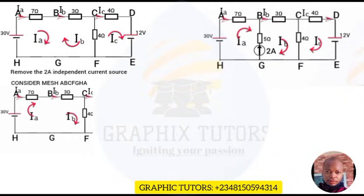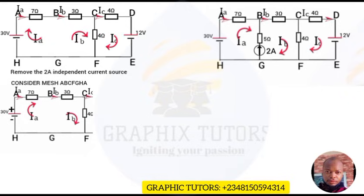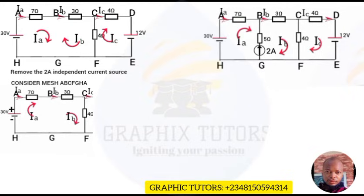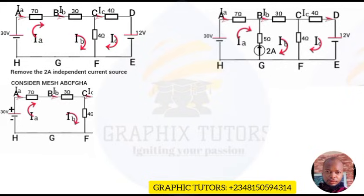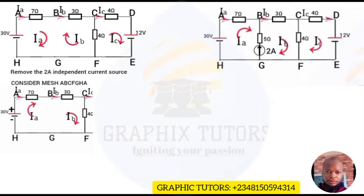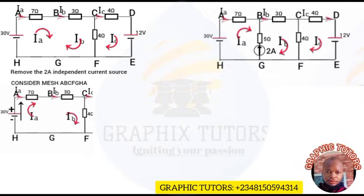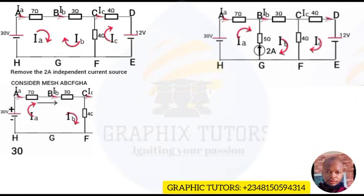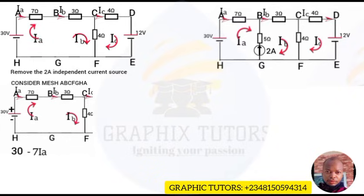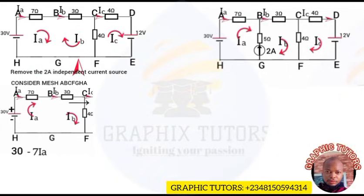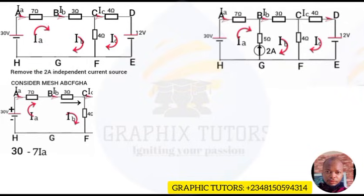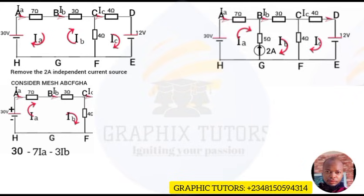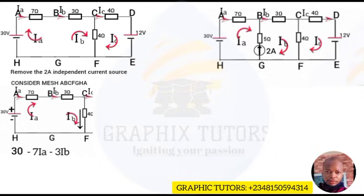Remember that the red side is the positive terminal and the black side is the negative terminal. Going clockwise, when current moves from lower to higher potential — from negative to positive — the voltage is positive, so we have +30. Since ia flows through part a-b through the 7-ohm resistor there is a voltage drop: −7ia. Similarly, ib flows through the 3-ohm resistor on part b-c, giving a voltage drop of −3ib. Now for part c-f, which is between mesh ib and mesh ic.